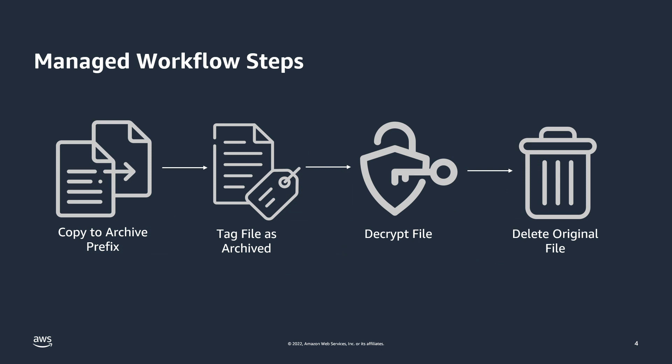The Managed Workflow contains four steps in total, one of which manages the PGP decryption process. The first step copies any file uploaded to S3 via Transfer Family to an S3 prefix named archive. The next step tags the file copied to the archive prefix as archived. Then the Workflow Orchestrator invokes the custom Lambda function, which performs the actual PGP decryption and moves the decrypted file to an S3 prefix named decrypted files. Lastly, the originally uploaded file gets deleted from S3.